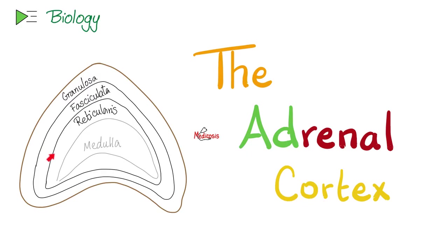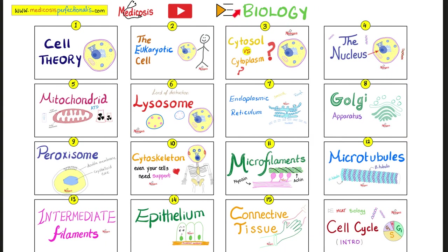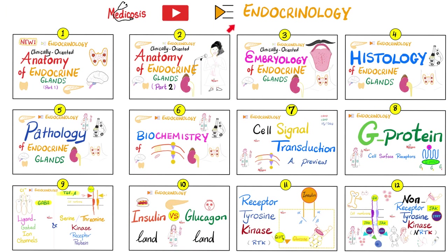Where is the cortex? It's the outer part — the crust of the gland. The cortex is outside. Where's the medulla? It's in the core of the gland. This lovely cortex is subdivided into three layers: glomerulosa, fasciculata, and reticularis. Please watch these videos in order. If you want the PhD-level content, check out my endocrinology playlist.